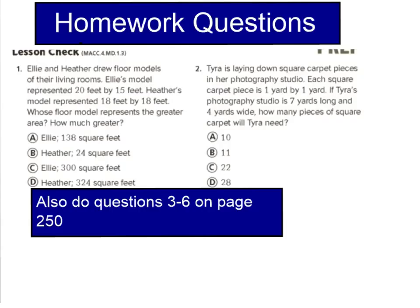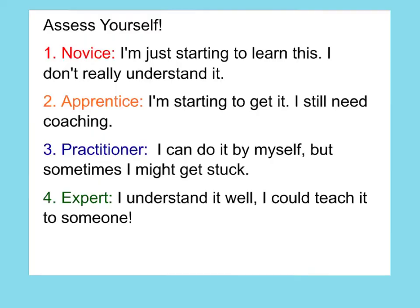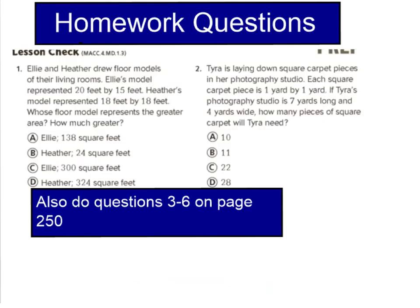Here are the homework questions for tonight. For number one, find the area for Ellie's model and Heather's model, then tell me which has the greater area and by how much. For number two, find how many pieces of square carpet Tyra will need. When you're done with numbers one and two, also complete questions three through six on page 250. At the top of page 250, assess yourself and tell me what level you think you are after doing the homework. Good luck tonight — I will see you tomorrow!